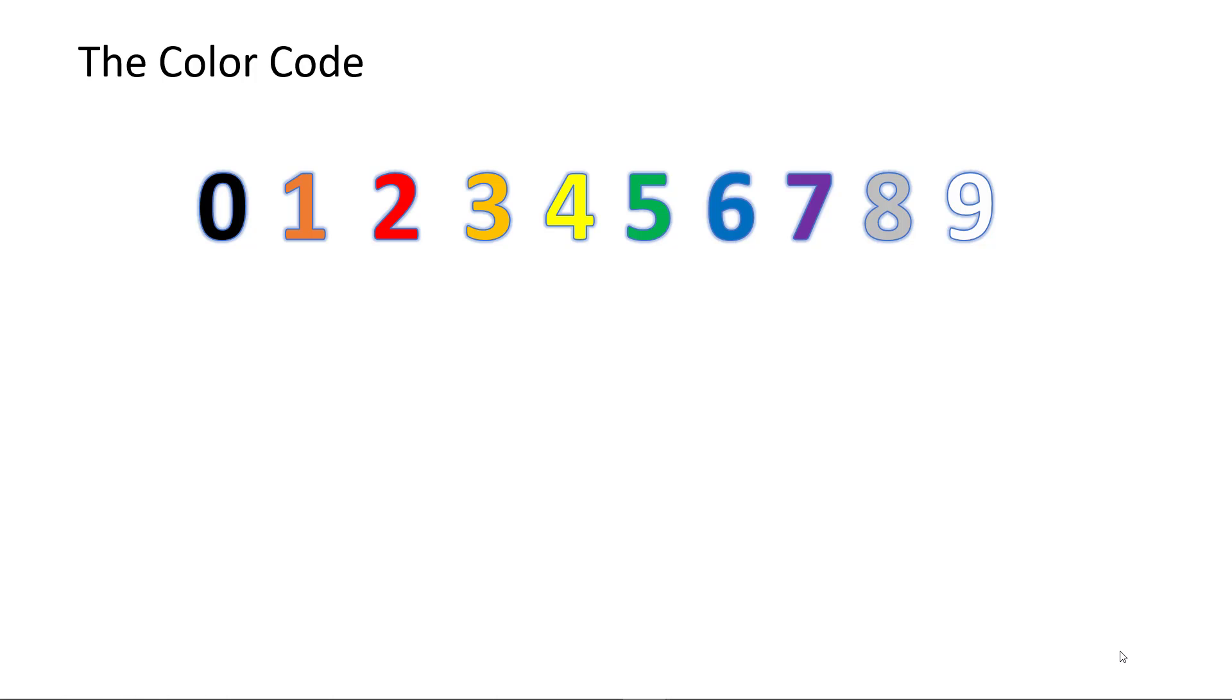Metal film resistors have a 1% tolerance or better. As such, another digit is needed to identify their value. For example, this brown-black-black-red-brown is a 1002 which equals 100 times a multiplier of 10 to the power 2, which adds another two zeros to the value, giving us a value of 10,000 ohms or 10 kiloohms.